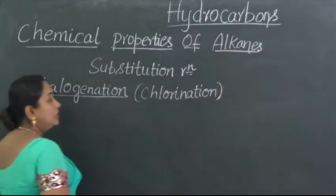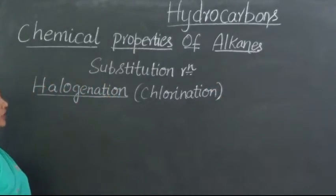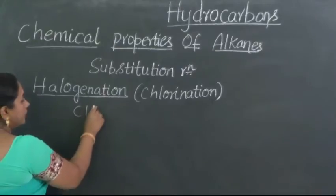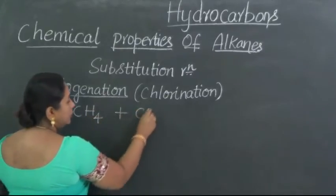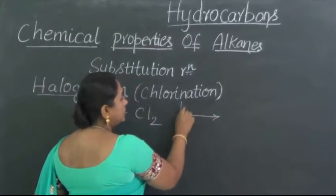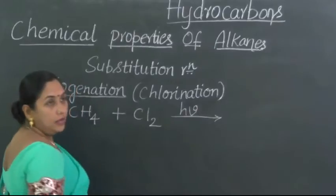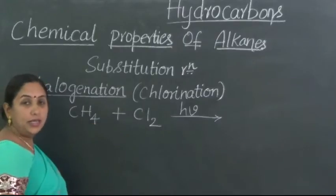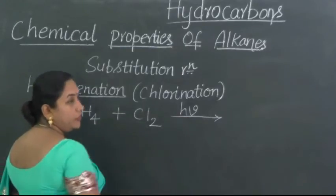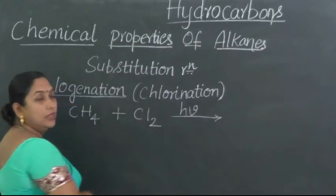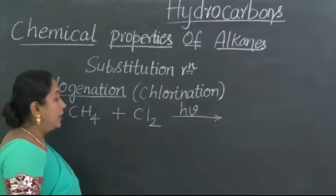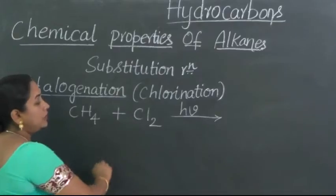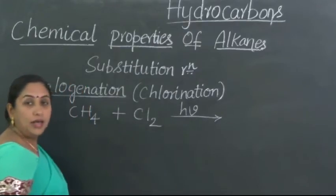Let us carry out the process of chlorination with the first member of alkanes, namely methane. Methane, when subjected to the process of chlorination in presence of diffused sunlight. This condition is very very essential for this process to set in. Only in the presence of diffused sunlight, that energy is taken by this chlorine molecule which will undergo homolytic fission forming the chlorine free radical. For that to happen, the presence of diffused sunlight is a must.